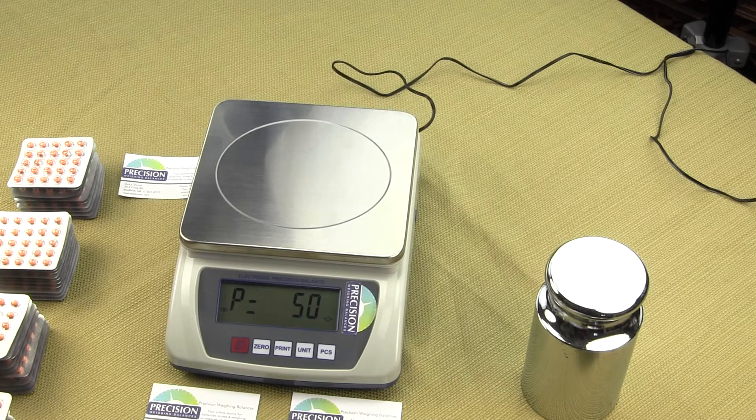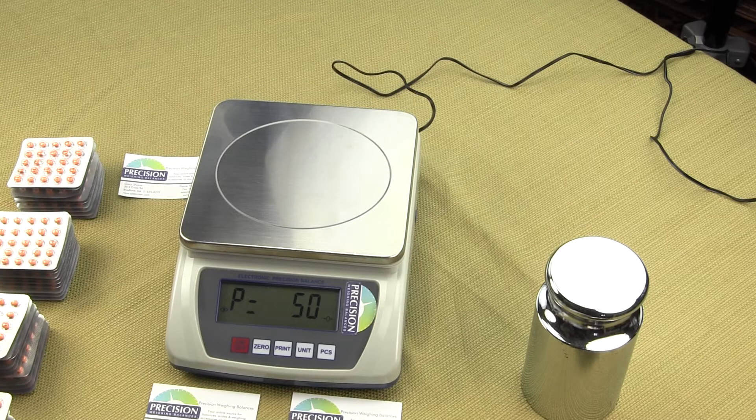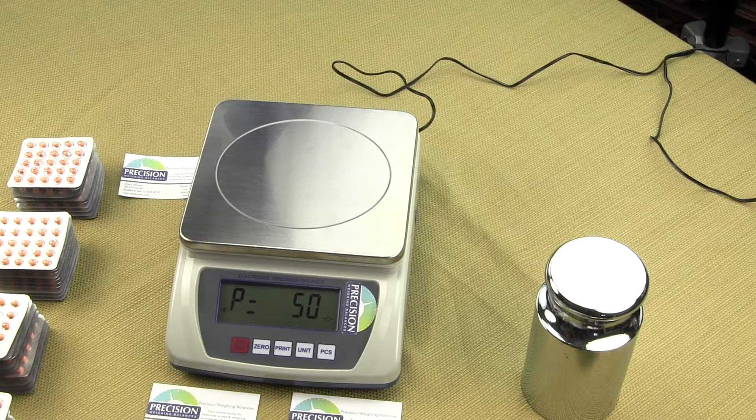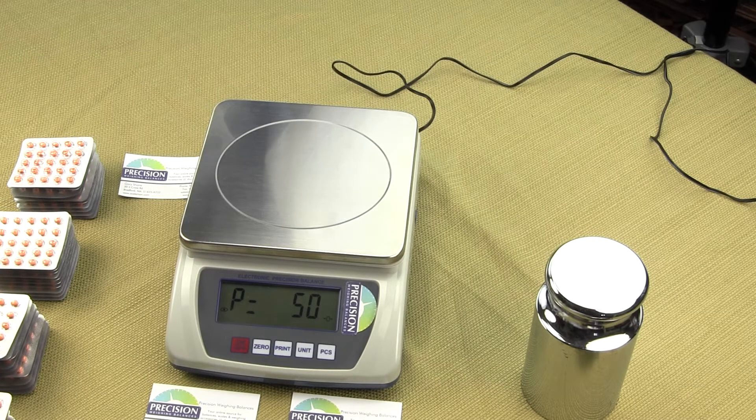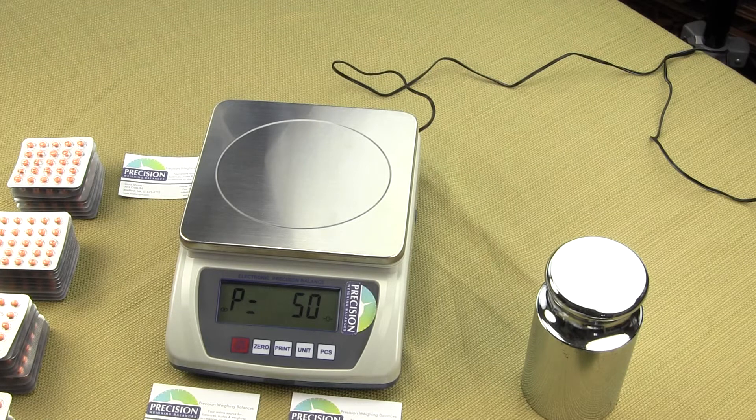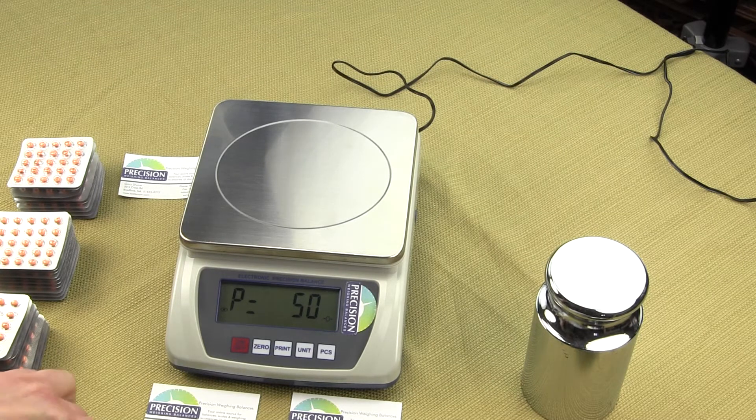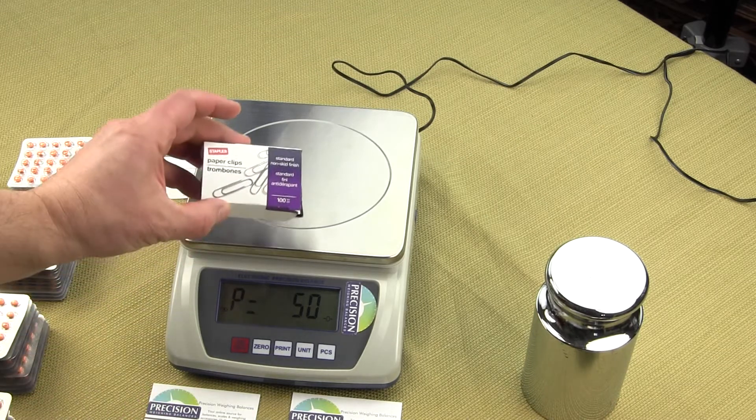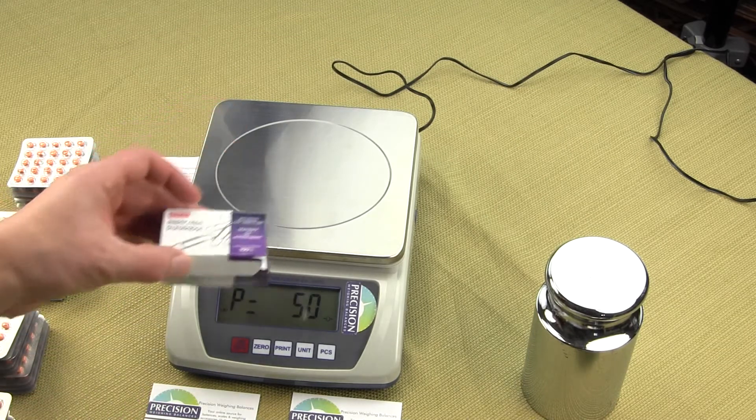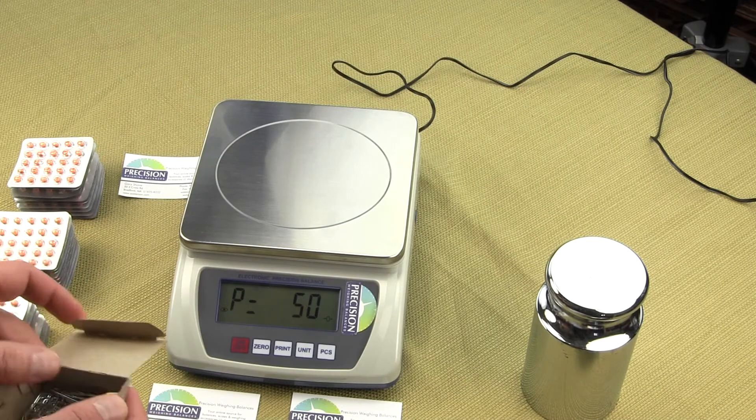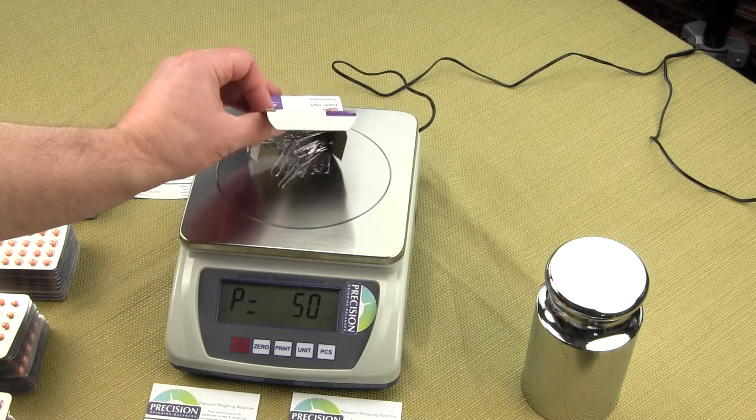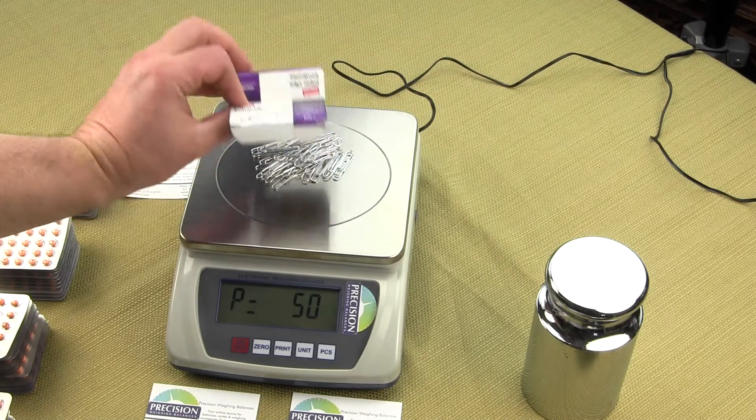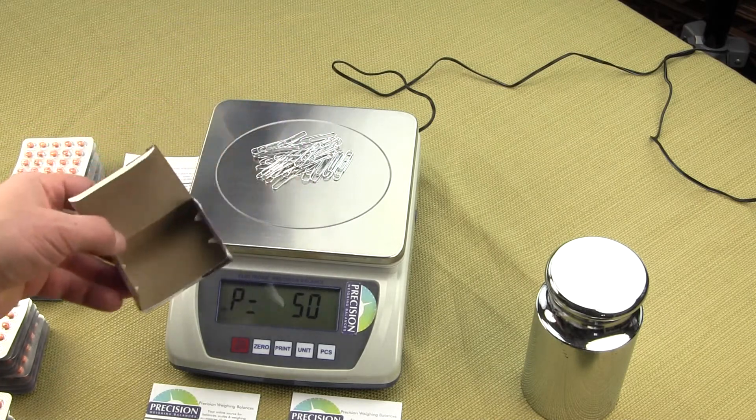Once you've selected the sample size that you want to use as a reference to determine your average piece weight, hand count the parts and place them on the platform. We're going to use standard paper clips purchased from Staples. I've hand-counted 50 paper clips and I'm going to place them on the weighing platform.